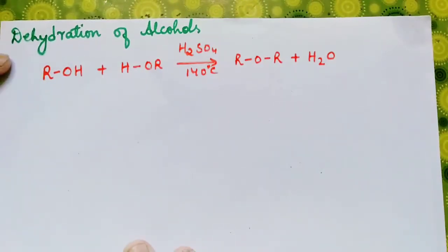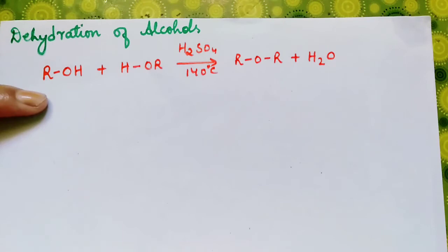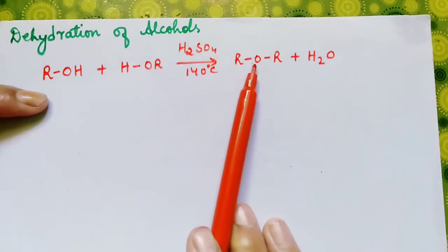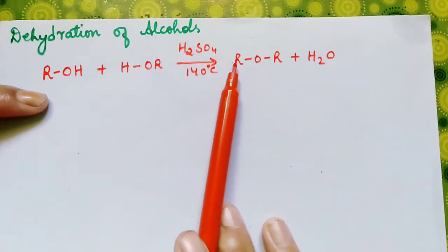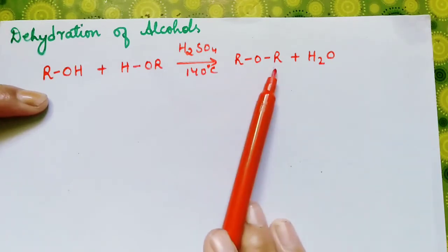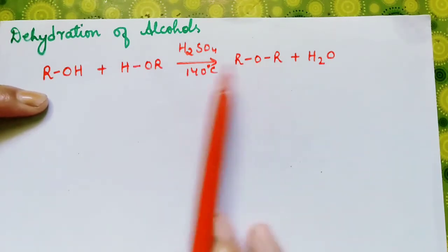In this video, we are going to learn about the dehydration of alcohols in order to prepare ether. Ethers are those compounds in which the oxygen atom is bonded to two alkyl groups. The alkyl groups may be same or different.